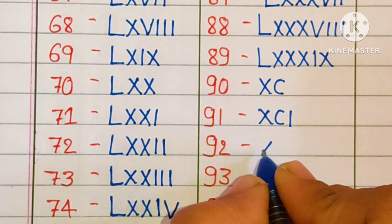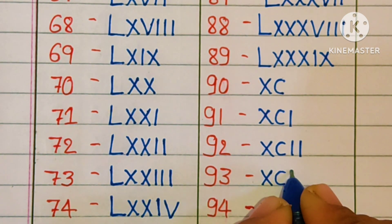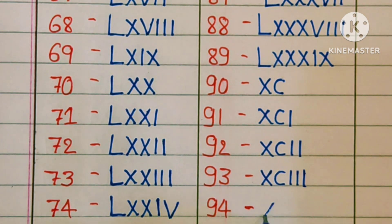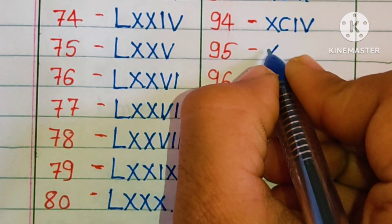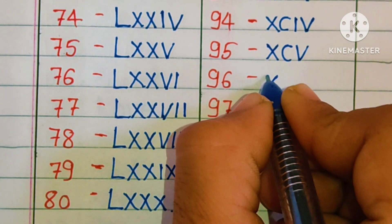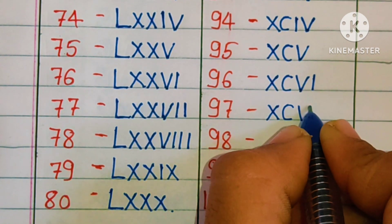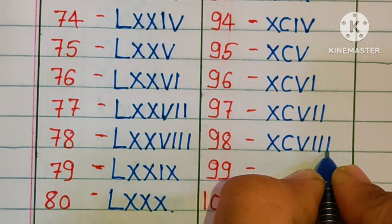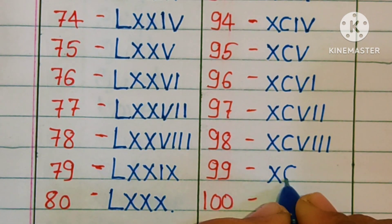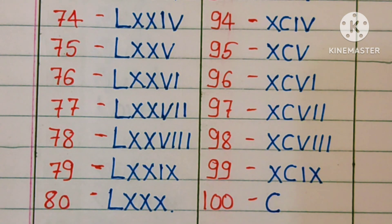91: XCI. 92: XCII. 93: XCIII. 94: XCIV. 95: XCV. 96: XCVI. 97: XCVII. 98: XCVIII. 99: XCIX. 100: C. Thank you.